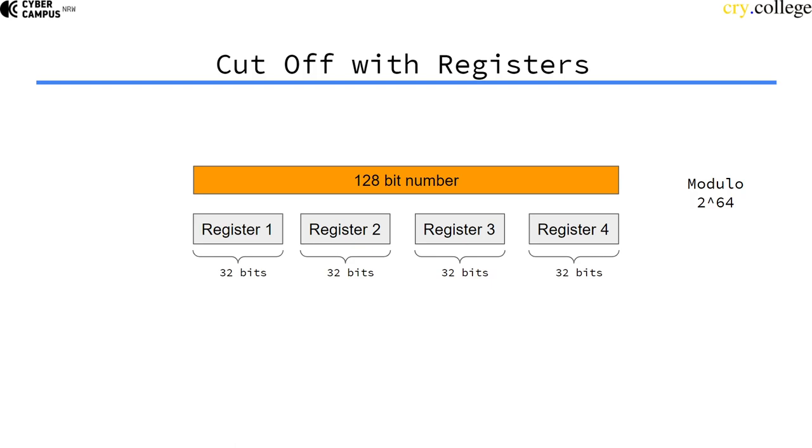Well, we don't compute anything. That just means we want the lowest 64 bits. So we just ignore the other two registers. And we have computed the result of the 128-bit number modulo 2^64 without actually computing anything.